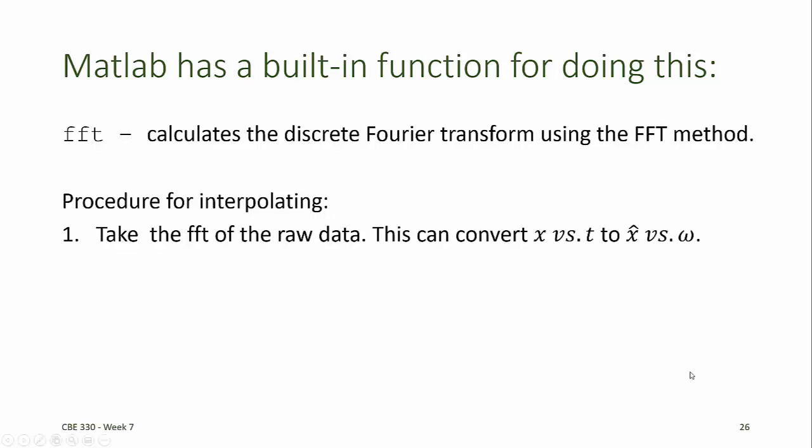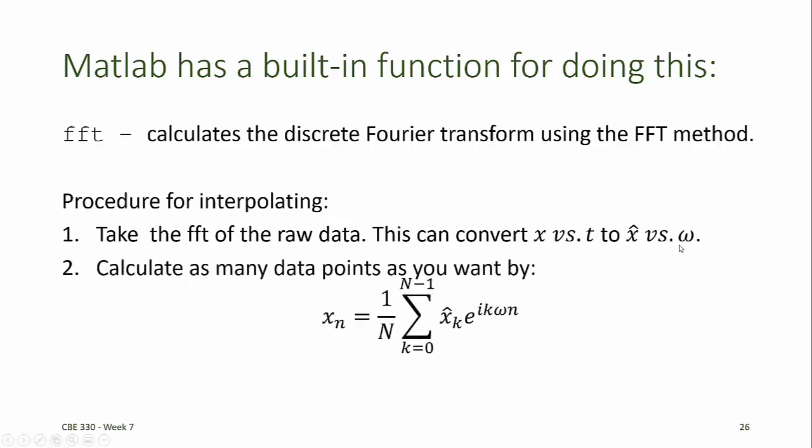we take the fast Fourier transform of all of the raw data. Remember, this converts our x data in the t space to x hat data in the omega space. Then we calculate as many data points as we want by taking the inverse transform. There's an example in your textbook of using the FFT function to extract out the coefficients of the Fourier interpolating polynomial.